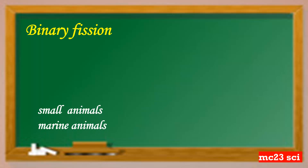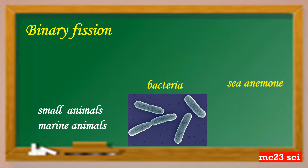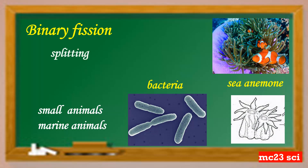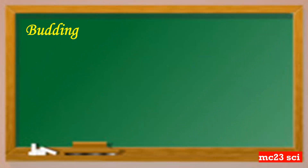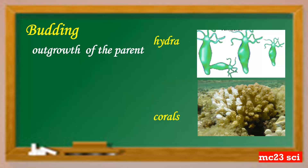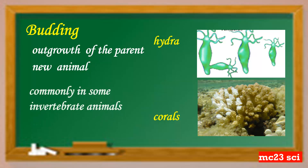Binary fission happens only in small animals and marine animals like bacteria and sea animals. This is also called splitting, wherein the animal divides itself into two. Budding occurs in animals like hydra, corals, and jellyfish, wherein an outgrowth of the parent animal produces a new animal.